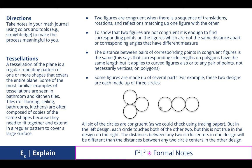The distance between two corresponding points, or two pairs, or pairs rather, in congruent figures is the same. This says that corresponding side lengths on polygons have the same length, but it applies to curved figures also, or to any pair of points, not necessarily vertices on polygons.